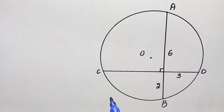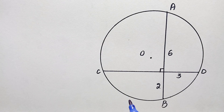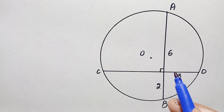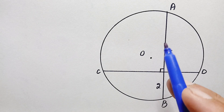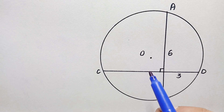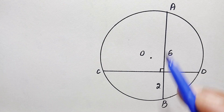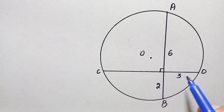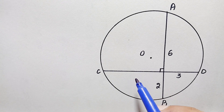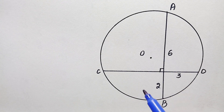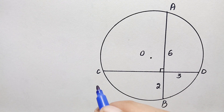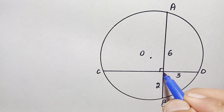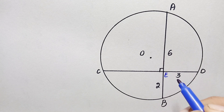Hello everyone, you are welcome. Today we have a very interesting geometric problem. We have given a circle and there are two chords given inside the circle. We have to find out the radius of this circle. Here we have given two chords called AB and CD. Let us suppose the intersection point is E.